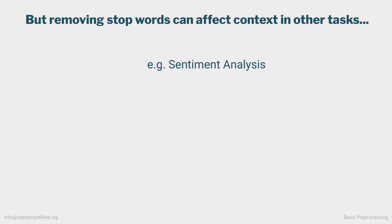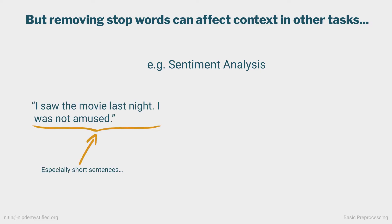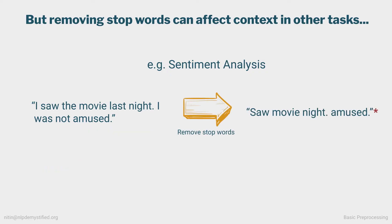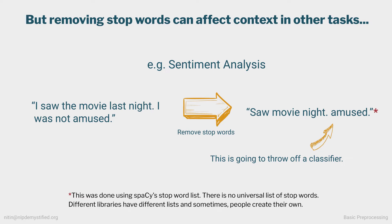On the other hand, let's say you're doing a task where context heavily matters — such as sentiment analysis, where we want to classify whether something is positive or negative. If we have the sentence 'I saw the movie last night, I was not amused' and run it through stopword removal, and our stopword list contains the word not, we'll end up with 'saw a movie night, amused,' which will throw off our classifier. There isn't a universal stopword list and you may even have to customize one for your domain.